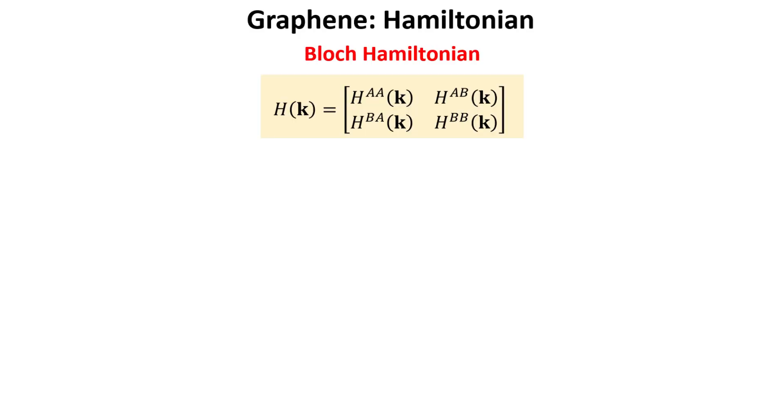We begin by recapping the main results of our previous videos on the electronic band structure of graphene, which you can find in our solid state physics playlist. We saw that the Block Hamiltonian describing the electron states in graphene has the form shown in the yellow box here.